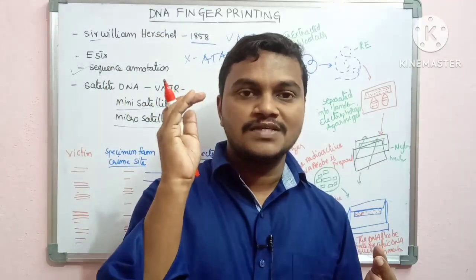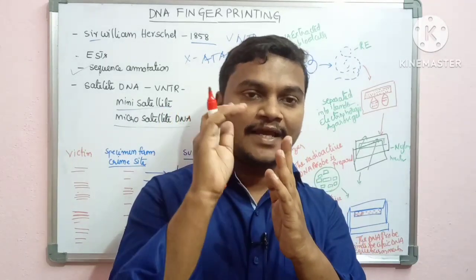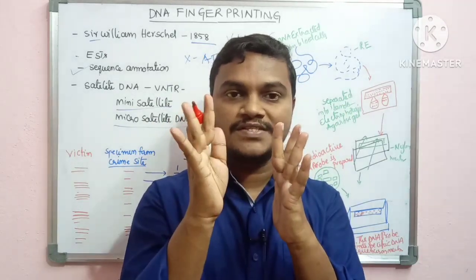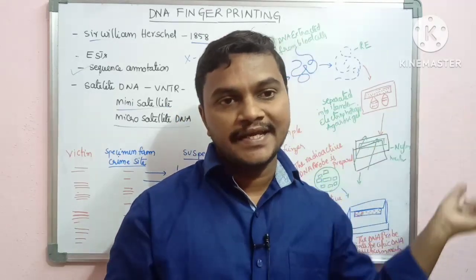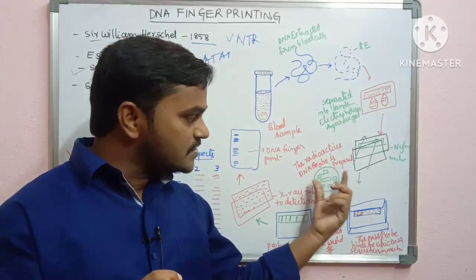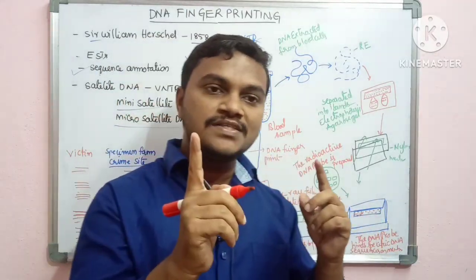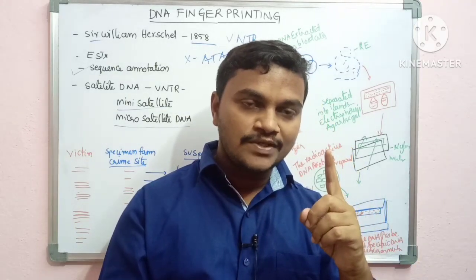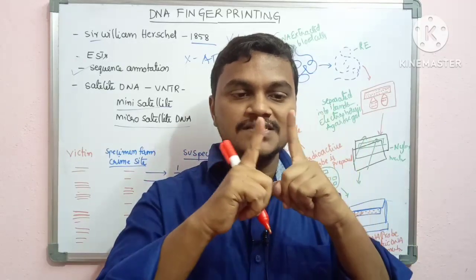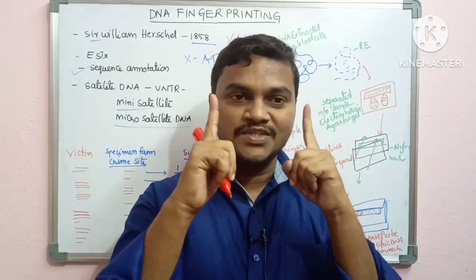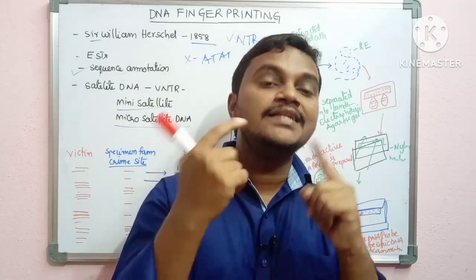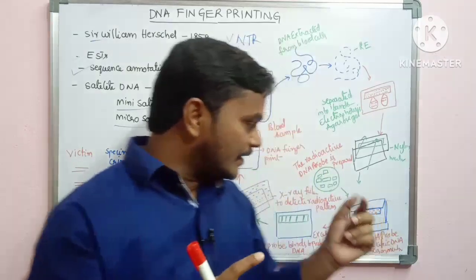The radioactive probe hybridizes with known sequences such as adenine-thymine base pairs. The known-sequence probe binds to unknown sequences in the DNA sample. The probe and real DNA single-stranded sample bind together via complementary base pairing to form a detectable pattern.